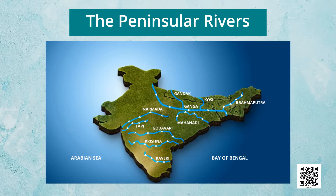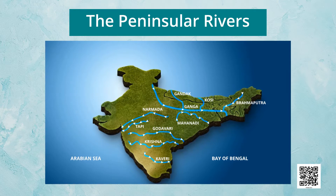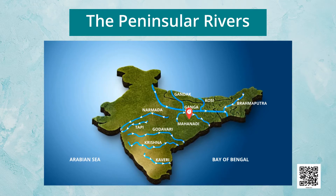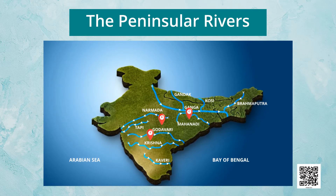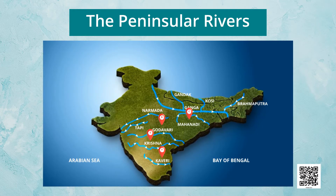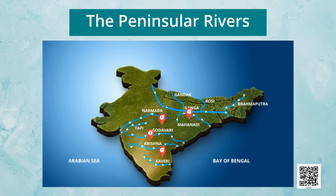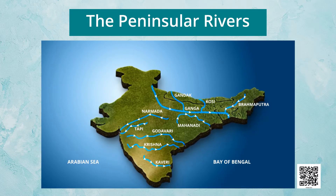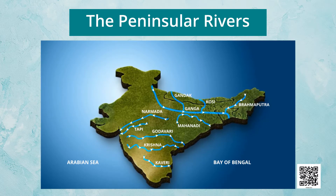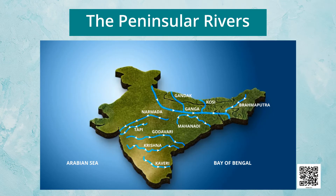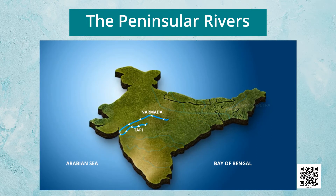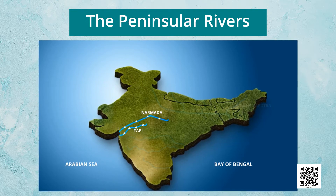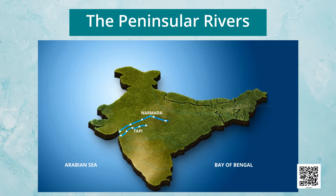From here we move to the peninsular rivers. The main water divide in Peninsular India is formed by the Western Ghats, which run from north to south close to the western coast. Most major rivers of the peninsula — such as the Mahanadi, Godavari, Krishna, and Kaveri — flow eastwards and drain into the Bay of Bengal, making deltas at their mouths. The Narmada and Tapi are the only long rivers which flow west and make estuaries. The drainage basins of peninsular rivers are comparatively small in size.